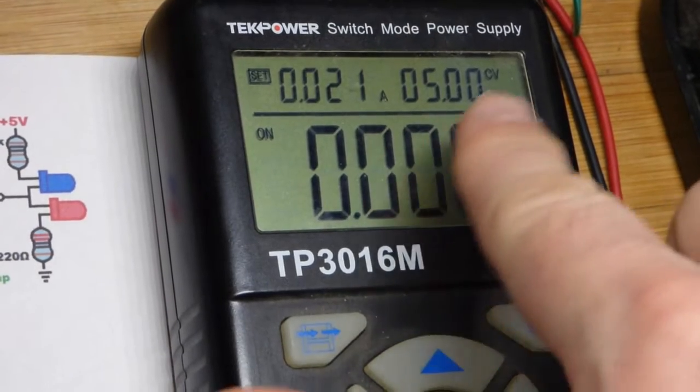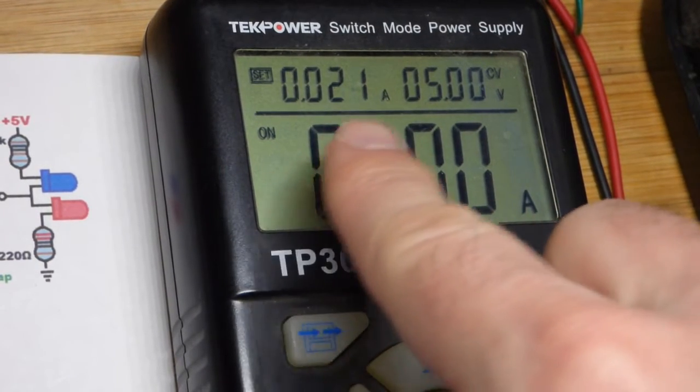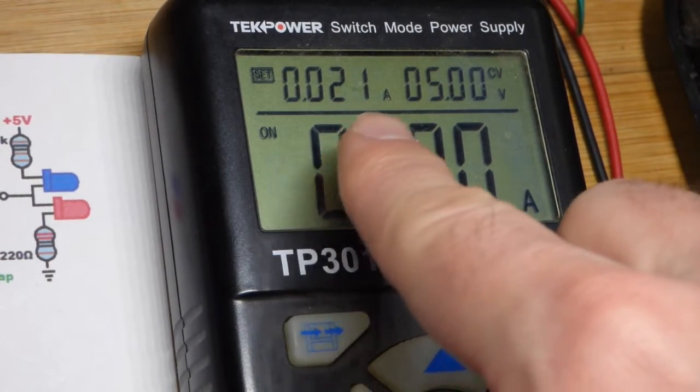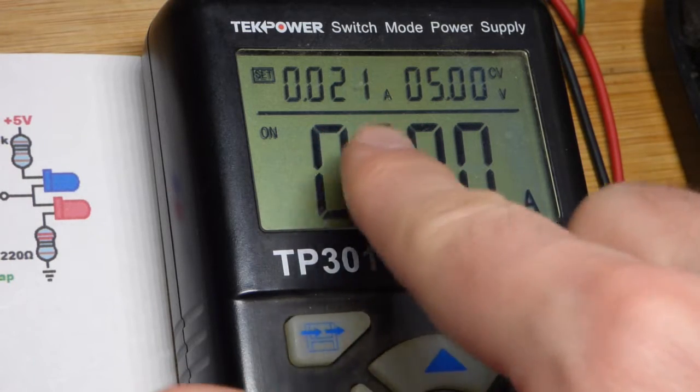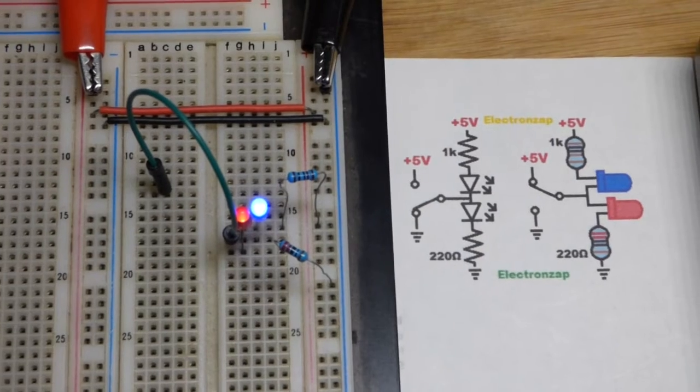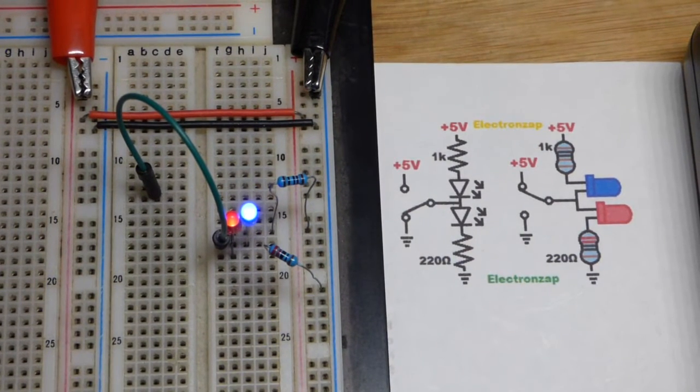I have the power supply set to five volts right there. In case I miswire something, I'm less likely to blow an LED because current's limited to 21 milliamps. They have a maximum current of 20 milliamps.